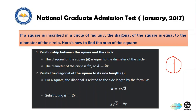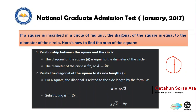The diagonal of the square equals the diameter of the circle, which is 2r. So d = 2r: from the center to each side is r, giving diagonal = r + r = 2r. For a square, the diagonal is related to the side length s by the formula d = s√2.